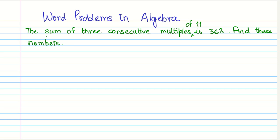We are just given a simple statement. Three consecutive multiples of 11 is 363. Now, you might think that there are three unknowns, right? And how are we going to solve this?